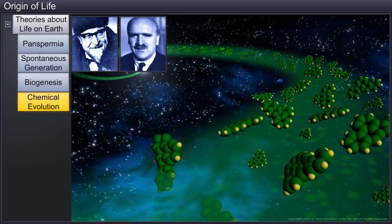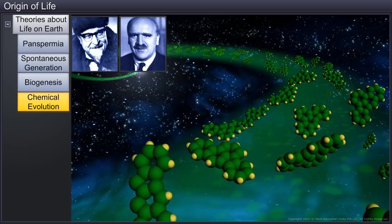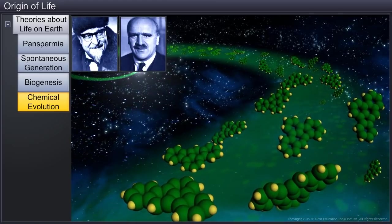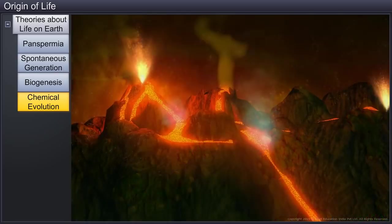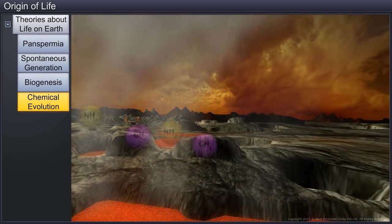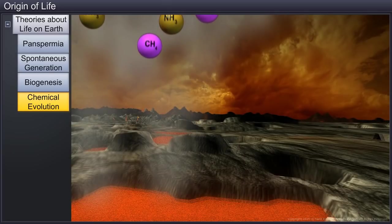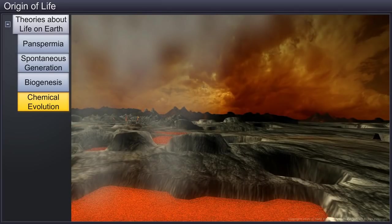They also pointed out that the birth of life was preceded by chemical evolution or the formation of diverse organic molecules from inorganic constituents. When the earth was created, the conditions were high temperature, volcanic storms, and reducing atmosphere consisting of methane and ammonia.